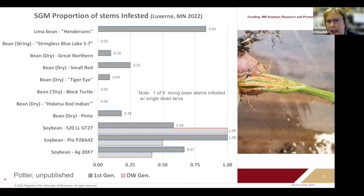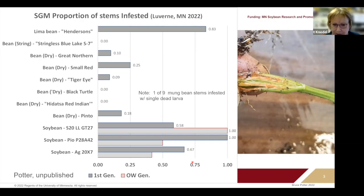In dry beans, the larvae seem to get down into the lower part of the stem, and here you can see the orange-colored larvae.